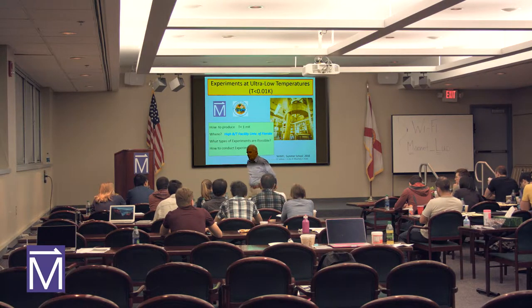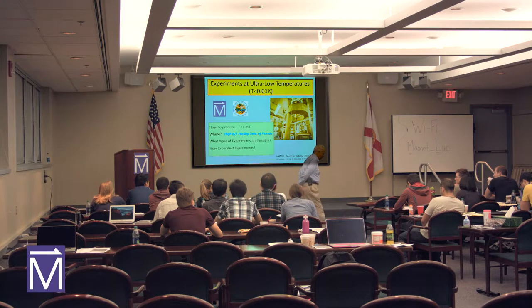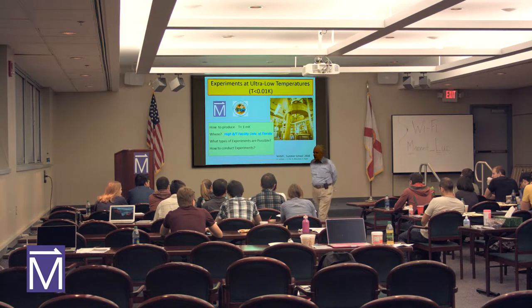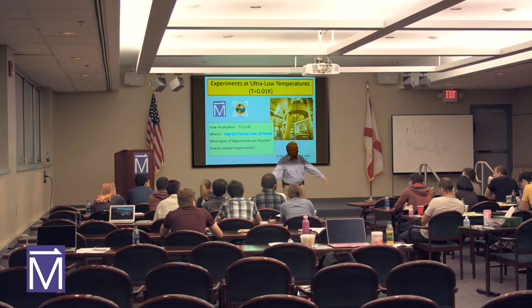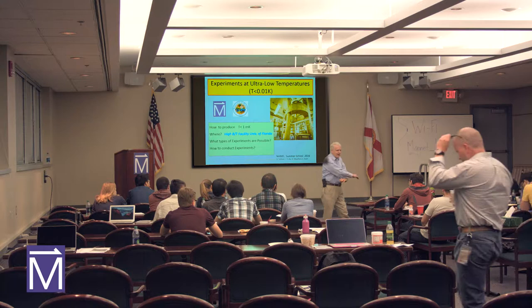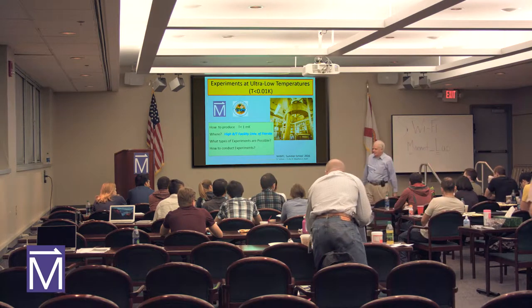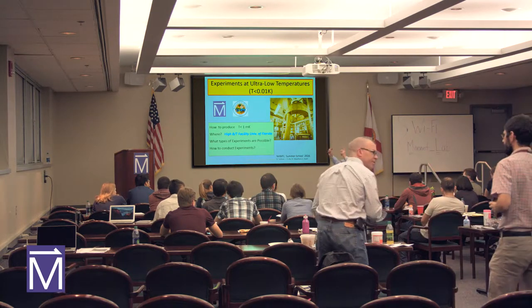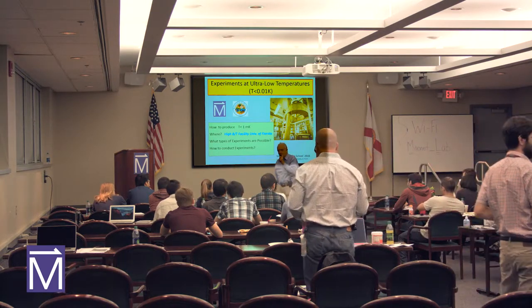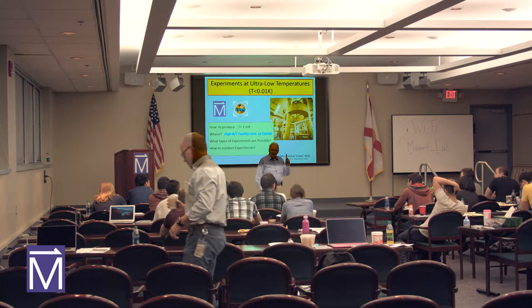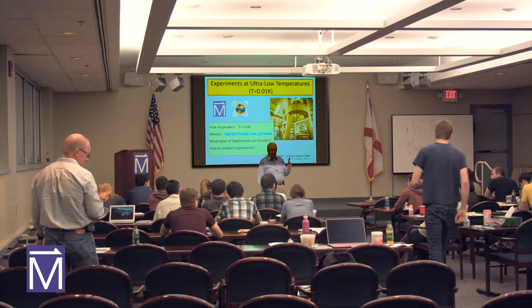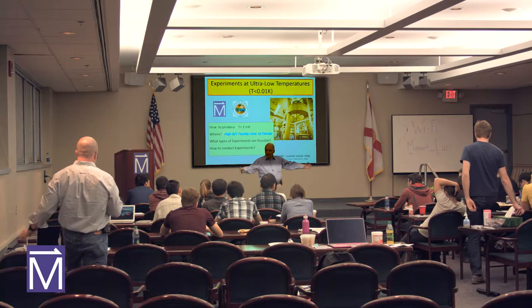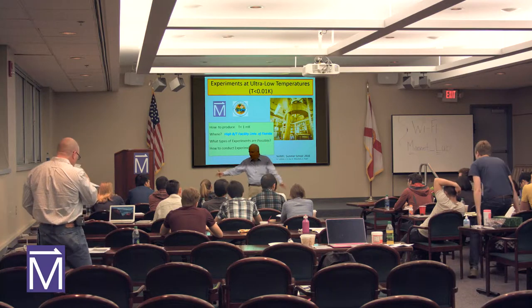It doesn't stop people who do computer simulations from spending a lot of time on them. What we want to do is take something simple — take hydrogen. We know hydrogen very well. What happens if I take a hydrogen molecule which has got a nuclear spin, and therefore a magnetic moment? I can write down my Hamiltonian with great precision.